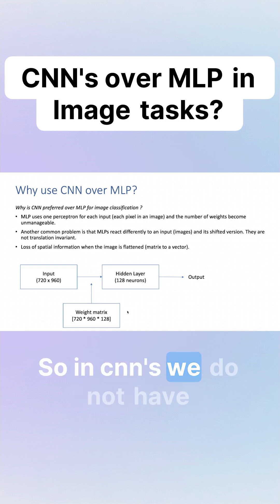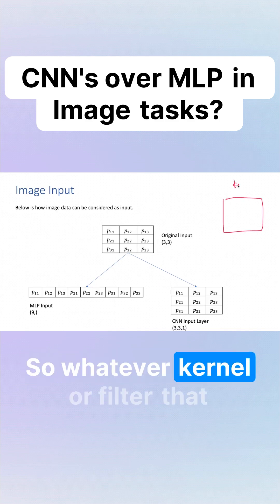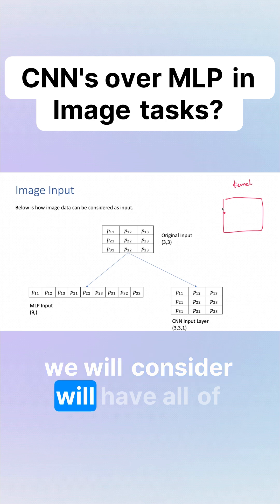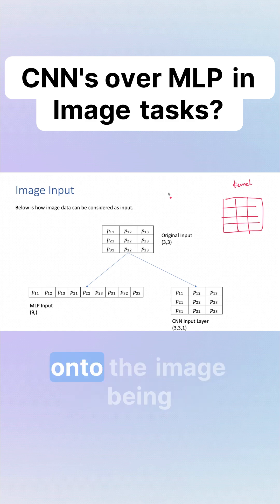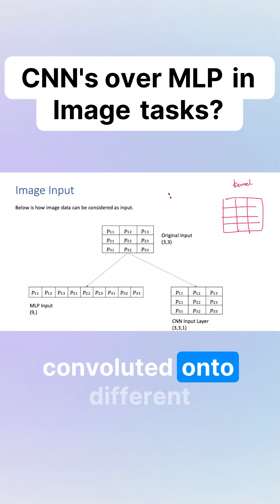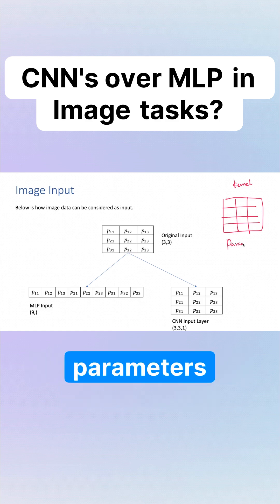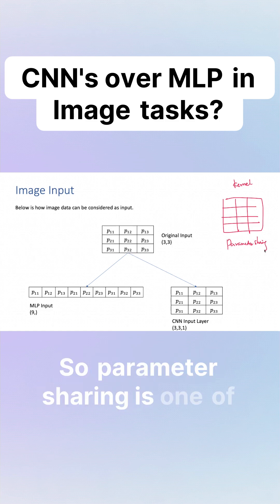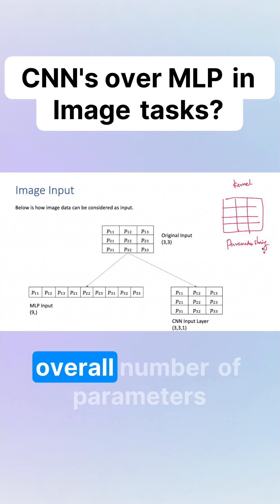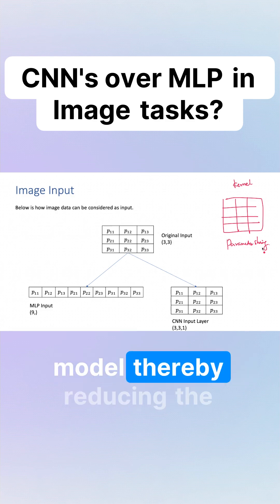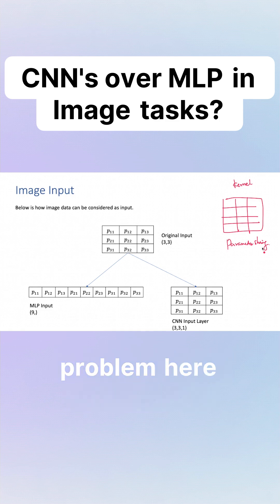In CNNs, we do not have this many weights due to the kernels. Whatever kernel or filter we consider will have values which are nothing but weights being convolved onto the image — onto different localized regions within your image. Thereby, you are sharing your parameters. Parameter sharing is one of the key concepts within CNNs, which reduces the overall number of parameters, thereby reducing the complexity and also reducing the overfitting problem.